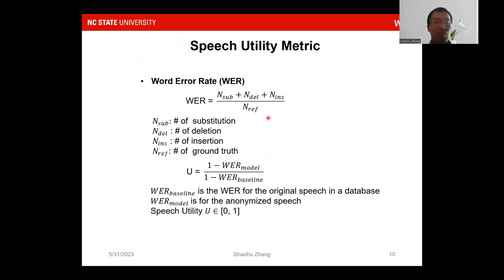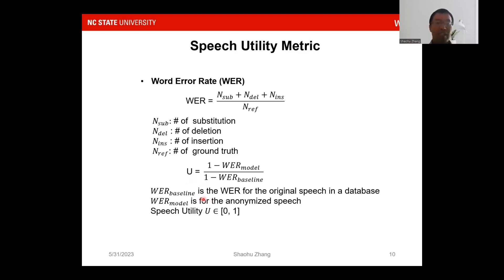To answer the first research question — how can we develop the privacy-utility tradeoff model — we first redefine the speech utility metrics. Existing work uses word error rate, which counts substitutions, deletions, and insertions divided by the number of ground truth words. In our approach, we normalize the word error rate as a utility score, where the WER baseline is the word error rate for the original speech in the database and WER model is for the anonymized speech. This normalizes speech utility to a range between 0 and 1.